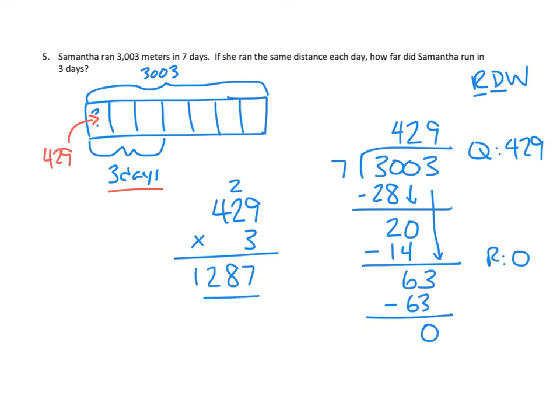And so this, I think, is our answer, but we have to do our last piece, which is our write strategy, which would be to write a sentence, and I think our sentence would be something like this, Samantha ran 1,287 meters in three days. That would be the right part of our strategy.